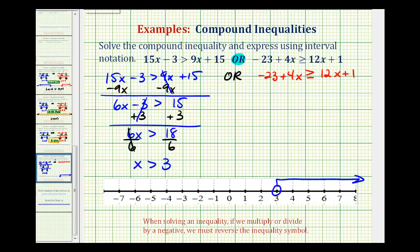Now we'll solve the second inequality. Again, notice we have x on both sides of the inequality, and since most prefer to have the variable terms on the left side, let's subtract 12x on both sides. We'd have negative 23 and this would be minus 8x, is greater than or equal to, this would be zero and then we have one.